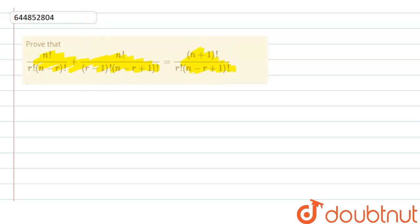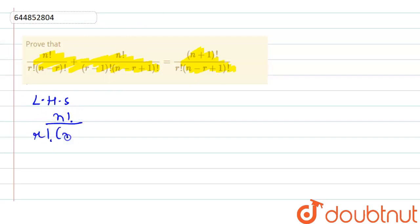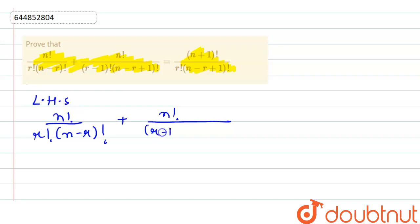So, we have to prove that LHS is equal to RHS. The LHS is: N factorial divided by R factorial into N minus R factorial, plus N factorial divided by R minus 1 factorial into N minus R plus 1 factorial.